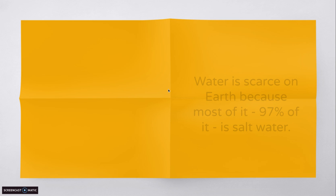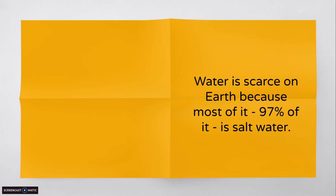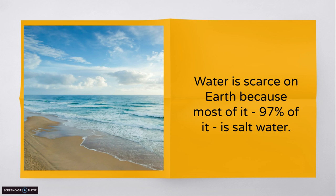And why is that? The reason water is scarce on Earth is because most of it — almost 97% of it — is salt water. And salt water cannot be used for drinking or for watering crops, which is primarily what it is needed for. So we can't use 97% of the water on Earth because that's salt water.